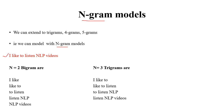Consider the sentence 'I like to listen NLP video.' If N equals 2 (bigrams), we get pairs: I-like, like-to, to-listen, listen-NLP, and NLP-video. If N equals 3 (trigrams), we consider groups of three words: I-like-to, like-to-listen, to-listen-NLP, listen-NLP-video.